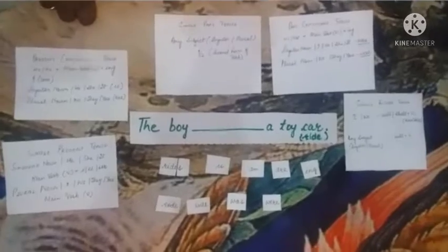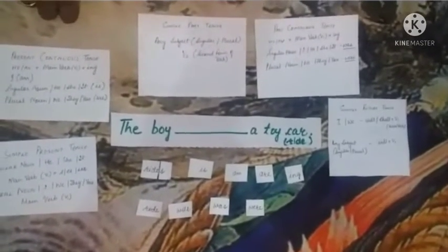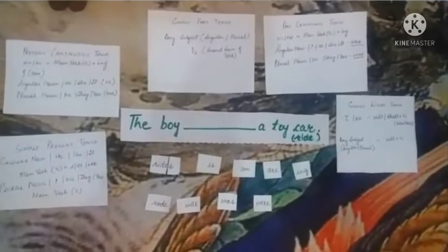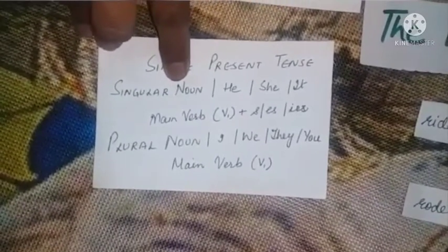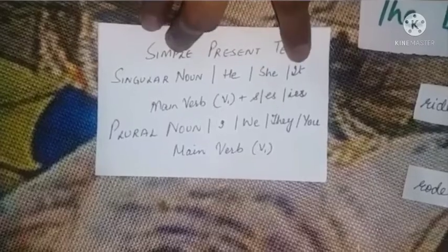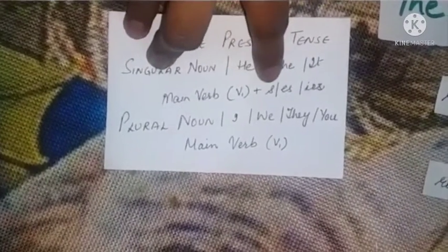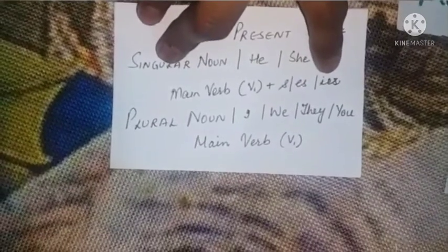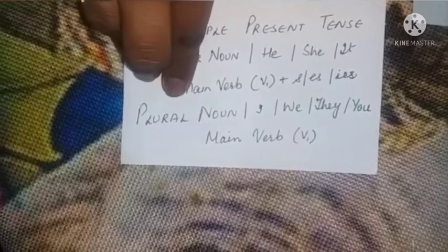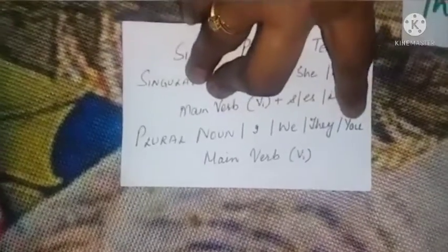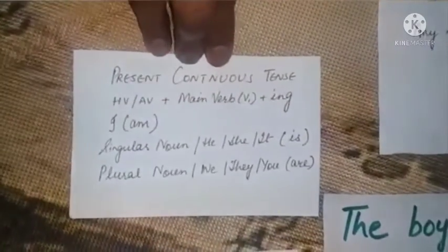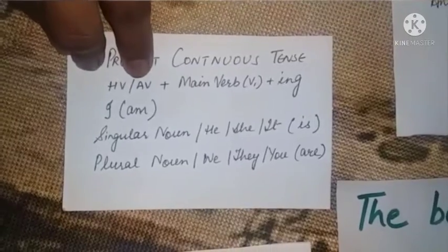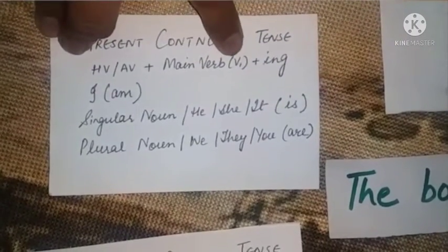It's activity time. Just now children, you have seen a video in which a boy was riding a toy car. Let us revise the tenses. In simple present tense, when there is a singular noun — ya he, she, it hota hai — to hum main verb yaani verb 1 ke saath S, ES, ya IES add karte hain. Jab subject plural noun hota hai ya I, we, they, you hota hai to hum simply main verb yaani verb 1 use karte hain.